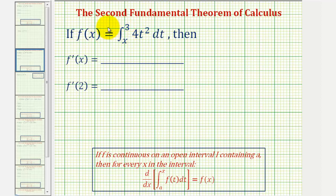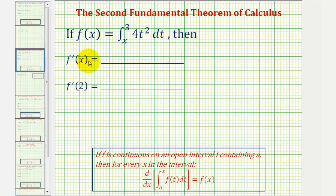Welcome to an example of the second fundamental theorem of calculus. If f of x equals the integral of four t squared from x to three, then we're asked to find f prime of x and f prime of two.